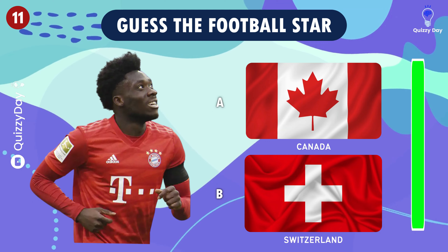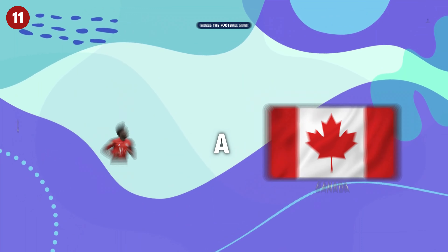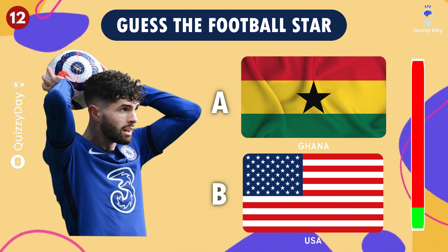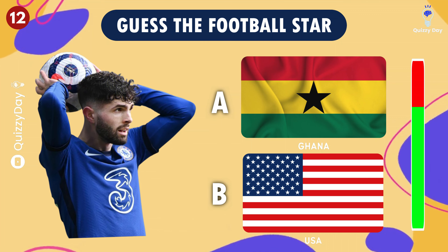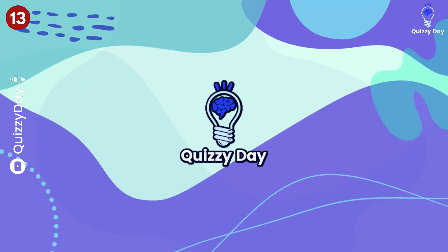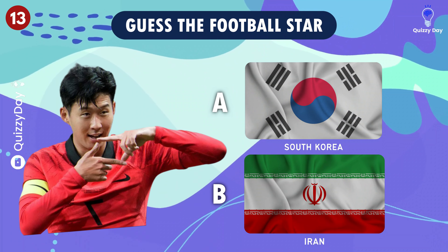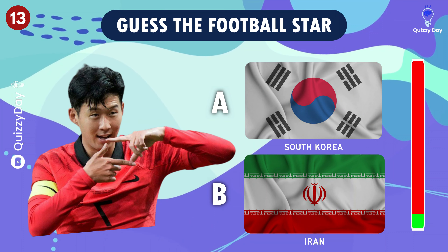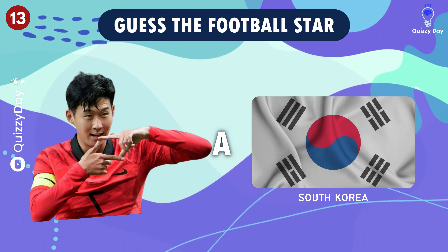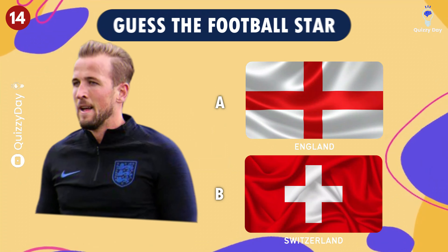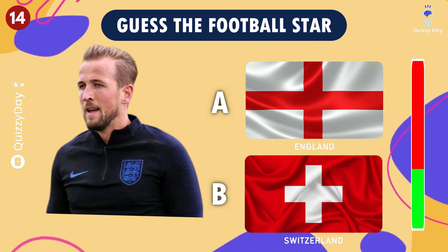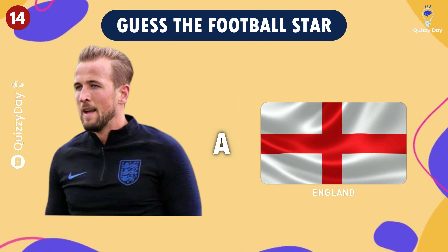The next question is — you're right! Canada. How about this football player? The correct answer is USA. Up next, it's letter A, South Korea. How about him? You got it! England.